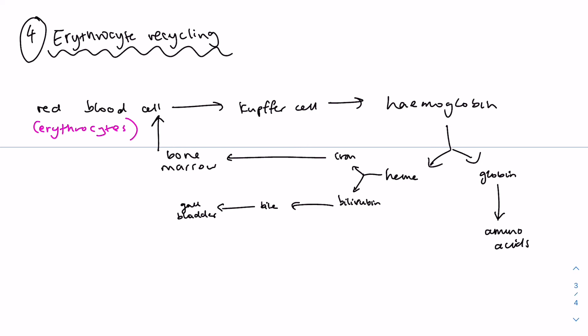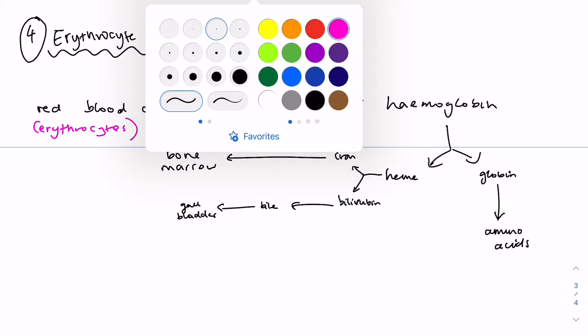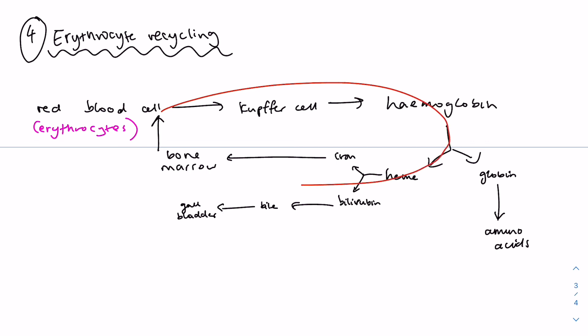So the components are either used to make new red blood cells through this loop, this looping pathway here, or it's used to make new compounds such as bile through this pathway.